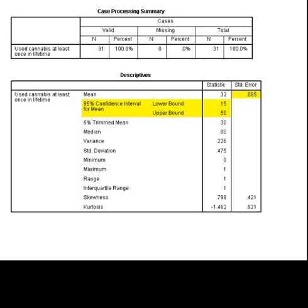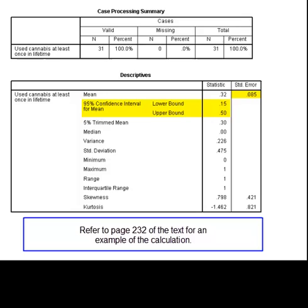There are two reasons why we say this is only an approximate method. First, the standard error is calculated as the standard error of the mean, as shown in equation 8.15 on page 224 of the text, and not as the standard error of the proportion, as shown in equation 8.28 on page 232 of the text. Second, the critical value of t at 30 degrees of freedom is used in the calculation rather than a z value — meaning that rather than 1.96 times the standard error, the confidence interval is being calculated as 2.042 times the standard error. Thus, the lower bound should be 0.16 rather than 0.15, and the upper bound should be 0.48 rather than 0.50. In short, when using this method in SPSS for estimating the confidence interval of a proportion, keep in mind that it is only an approximate value.